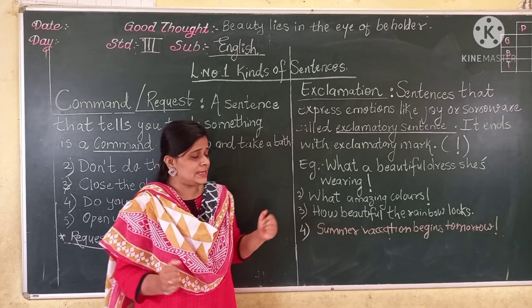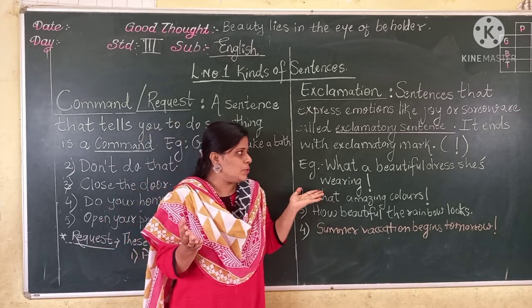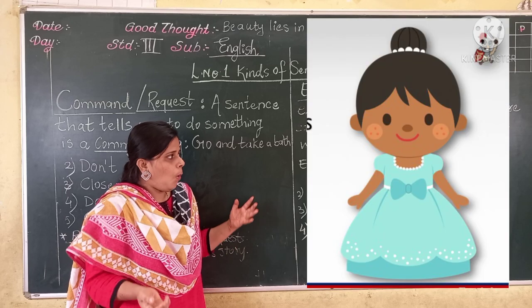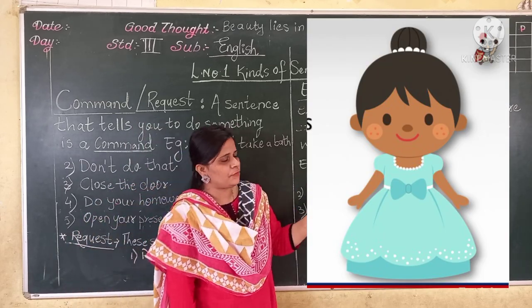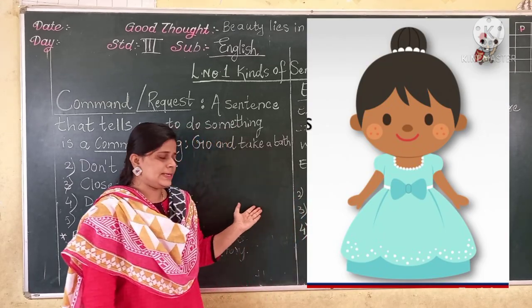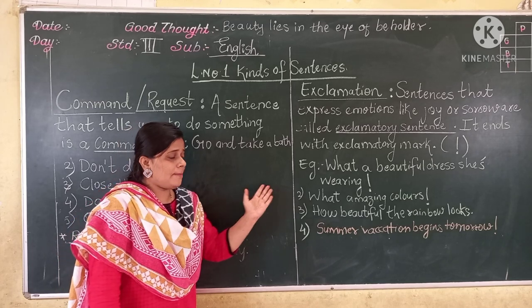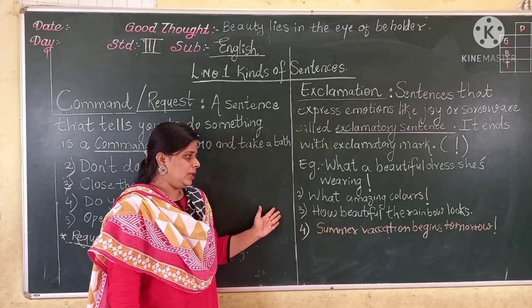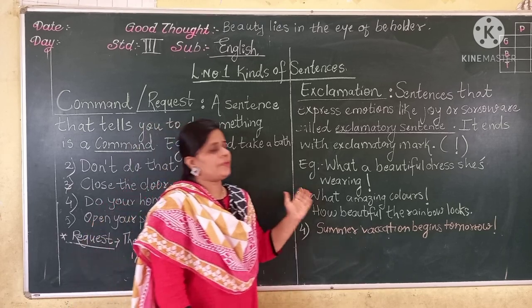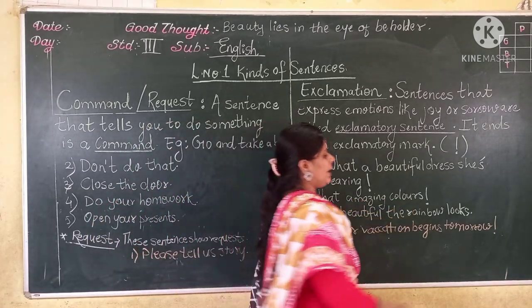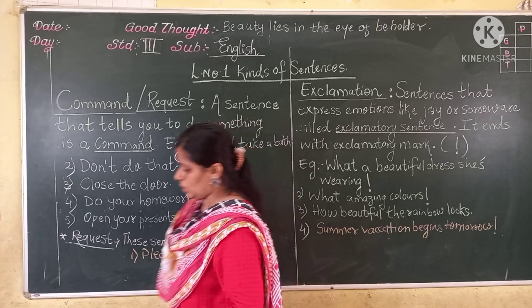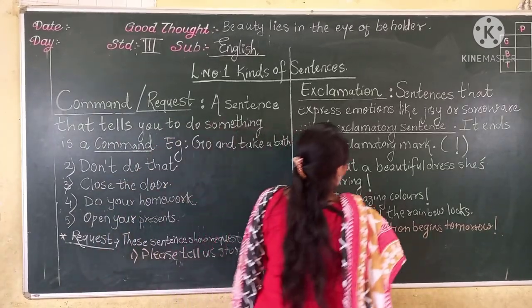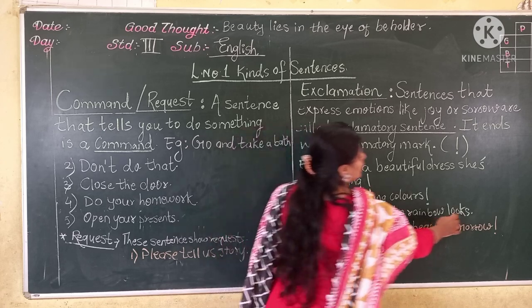Now we will see the examples. 'What a beautiful dress she is wearing!' — you are expressing. Next example: 'What amazing colors!' Third example: 'How beautiful the rainbow looks!' — and it ends with an exclamation mark.